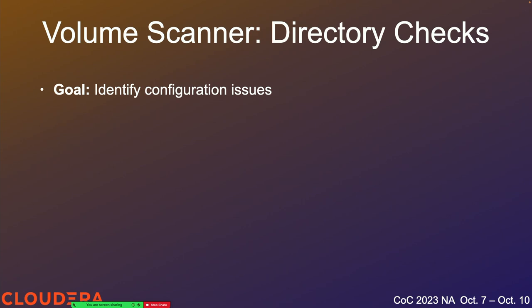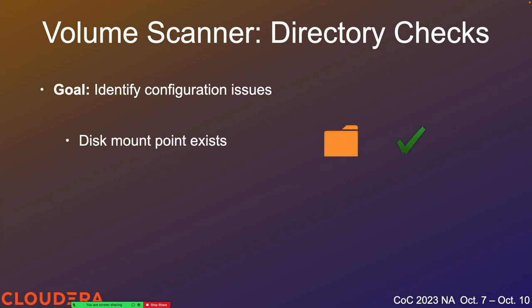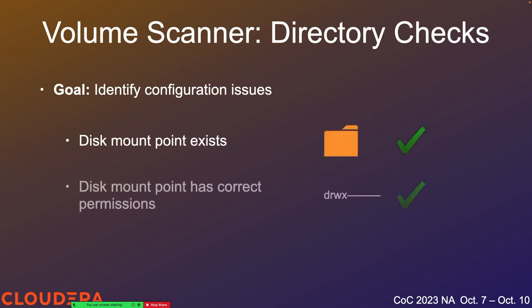The volume scanner is broken into two pieces: directory checks and disk checks. Directory checks are like a prerequisite — they're mostly identifying configuration issues rather than hardware problems. This checks that the configured mount point of the disk exists and that the data node process has the correct permissions. If any of these fail, the data node has no way to reach the hardware in the first place, so we bail out before further checks. This is probably just a configuration issue the admin would need to resolve.